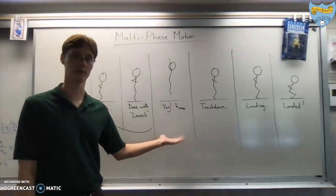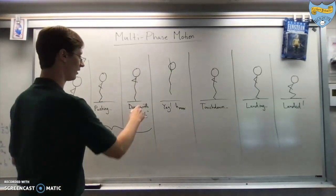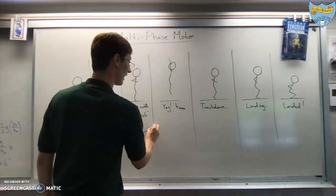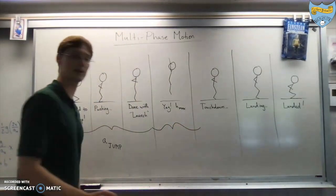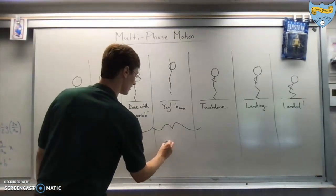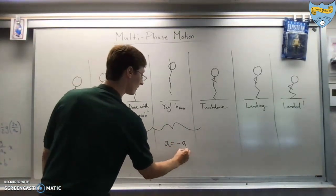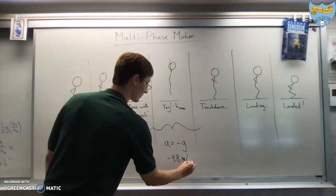After the jump, the push off, now for this part of it, all the way up from when you leave the ground to when you touch down again, for that part of your motion, the acceleration is gravity, which is to say negative 9.8 meters per second squared.